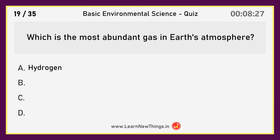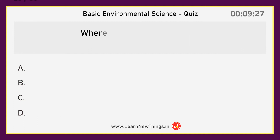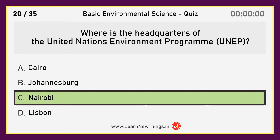Which is the most abundant gas in Earth's atmosphere? Nitrogen. Where is the headquarters of the United Nations Environment Programme? Nairobi.